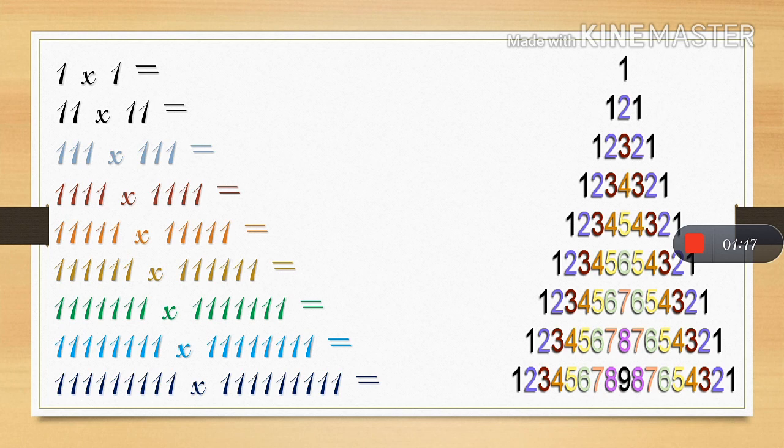Same as that, if we are multiplying 6 times 1 into 6 times 1, then our answer will be 1, 2, 3, 4, 5, 6, and then 5, 4, 3, 2, 1. Same as 9 times 1 into 9 times 1 will be 1, 2, 3, 4, 5, 6, 7, 8, 9, then 8, 7, 6, 5, 4, 3, 2, 1.